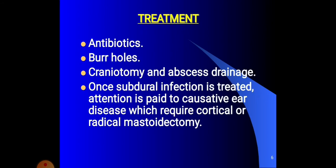We see the treatment of subdural abscess. First, we give antibiotics to the patient. Then, a burr hole procedure is done for the drainage of the excessive fluid or pus. Craniotomy and abscess drainage also help. Once the subdural infection is treated, we will give attention to the causative agent, which may require cortical or radical mastoidectomy for permanent treatment.